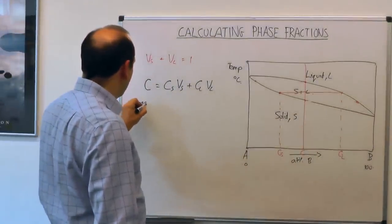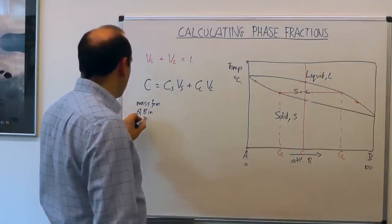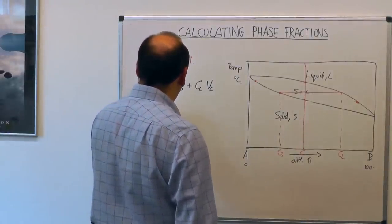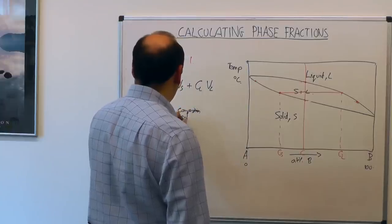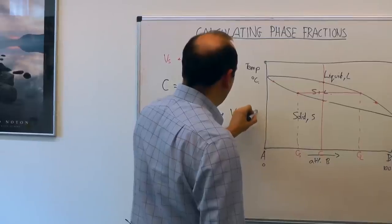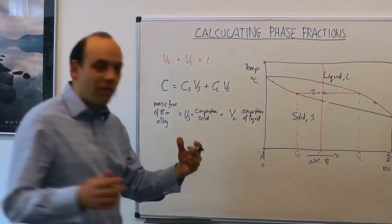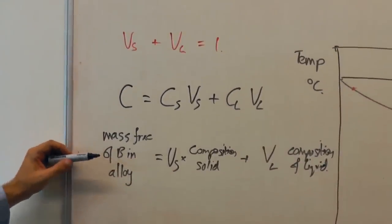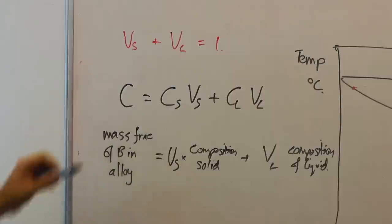So the mass fraction of B in the alloy equals the volume fraction of solid times the composition of the solid, plus the volume fraction of liquid times the composition of the liquid. The physical principle this expresses is conservation — we're conserving the number of B atoms, and implicitly the number of A atoms. So this is a conservation rule.